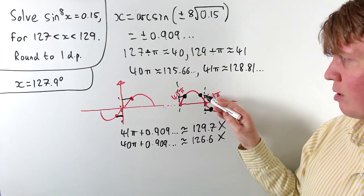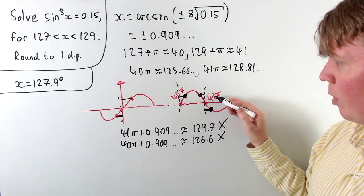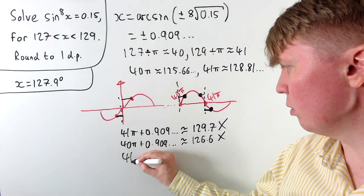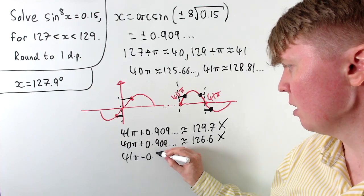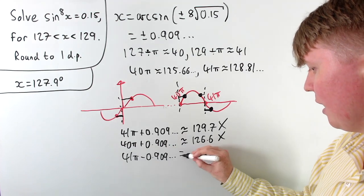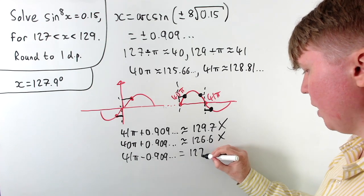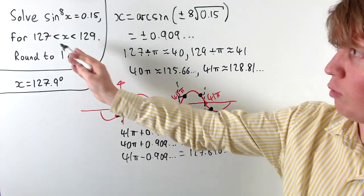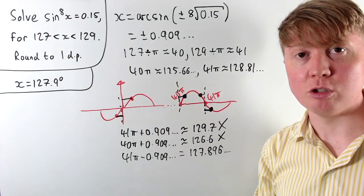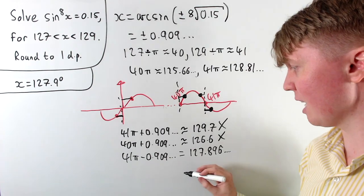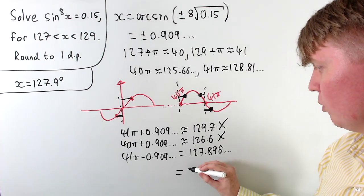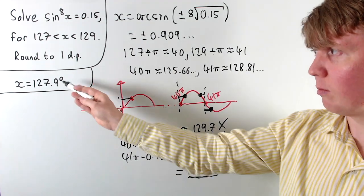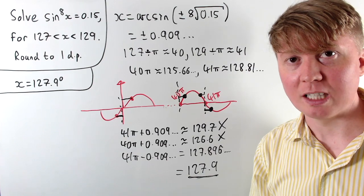The only remaining possibility is 41π minus 0.909. Calculating 41π minus 0.909 gives 127.896, which is in the range between 127 and 129. Rounding to one decimal place, we get 127.9 radians — exactly the same value as when we were working in degrees.